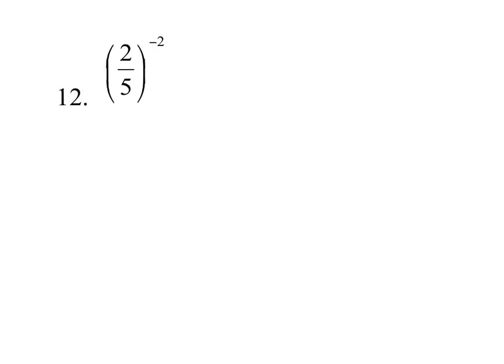And the last one, we have a fraction, again, raised to a negative exponent. First rule, flip it. So instead of 2 fifths, we'll make that 5 over 2.